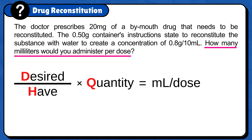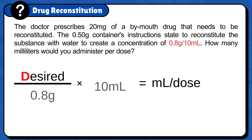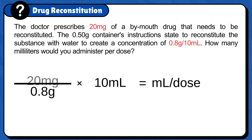Now that the formula is ready, we need to plug in the numbers. Start with half and quantity because they are usually given to you and they come together. For this problem, that is 0.8 gram per 10 milliliters. For desired, you will plug in the doctor's order: 20mg.